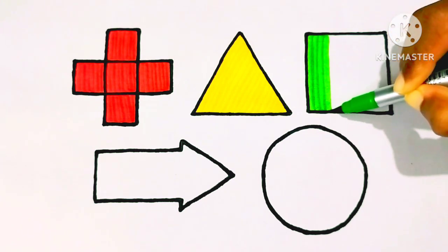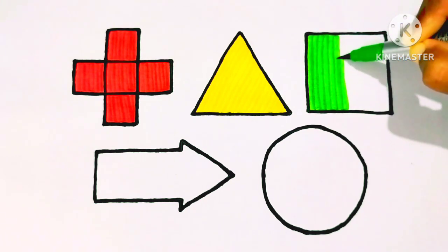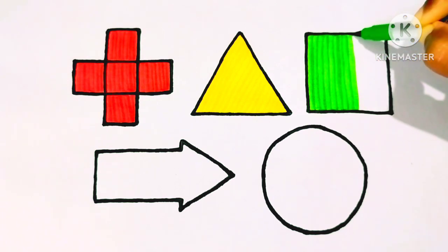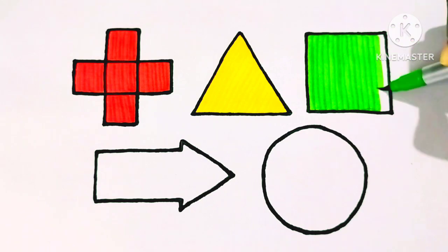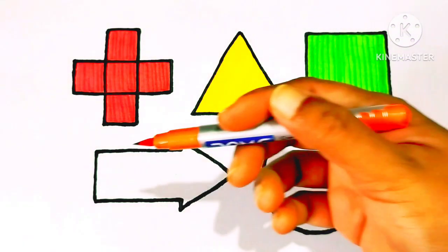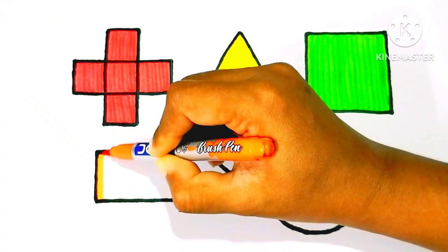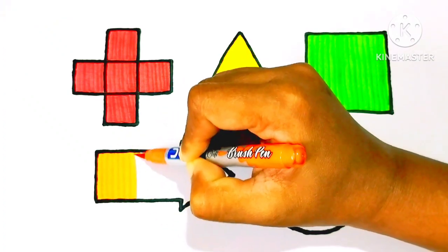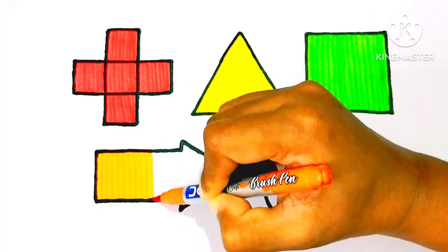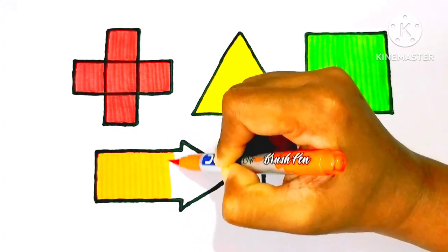Green color square. Now I know my ABCs, next time won't you sing with me. Orange color. Orange color arrow.